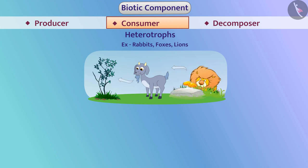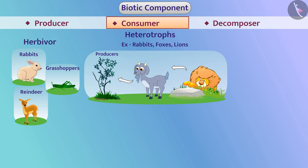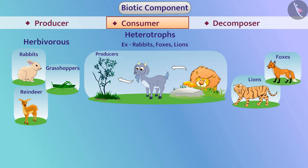Organisms which are directly or indirectly dependent on the producers for food are called consumers. Organisms such as goats, reindeer, rabbits, and grasshoppers, which directly obtain food from autotrophic organisms, are called herbivores. Organisms such as lions, foxes, and cheetahs, which obtain food by eating other animals, are called carnivores.